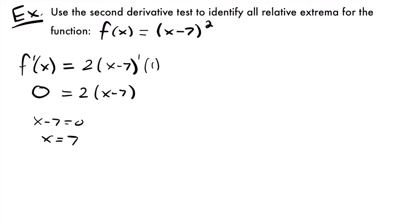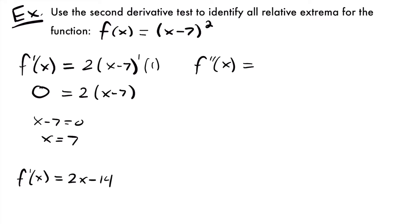Now we'll find the second derivative and plug x = 7 in to see if this is a relative minimum or maximum. f''(x) is the derivative of 2(x-7), which we can rewrite as 2x-14. The derivative of 2x is just 2, and the derivative of -14 is 0. So our second derivative is simply equal to 2.